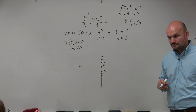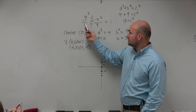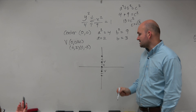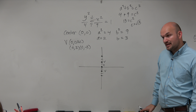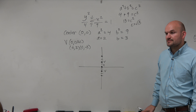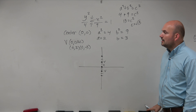Correct. A squared is under the y, so it's a vertical transverse axis. A is the distance from the center to your vertices, just like an ellipse. You can write plus or minus 2, and I was just showing you because we're going to do one where the center is not 0, 0.